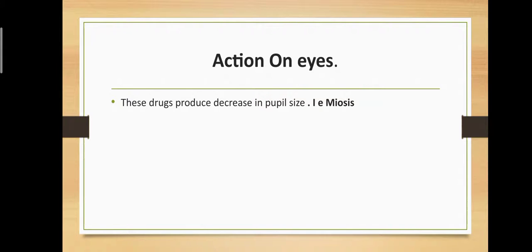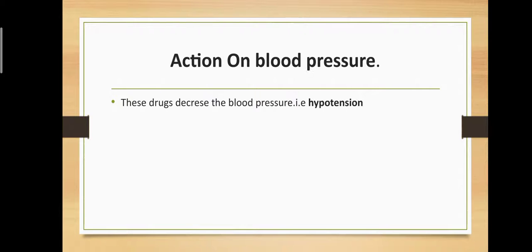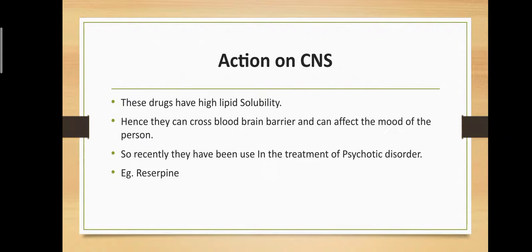Action on eyes: these drugs produce a decrease in pupil size, that is miosis. Action on blood pressure: these drugs decrease blood pressure, producing hypotension.